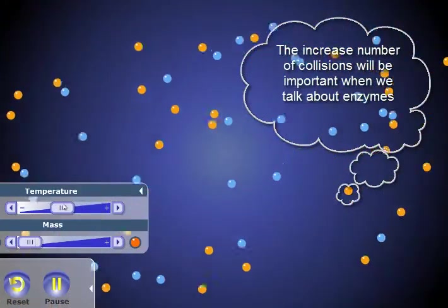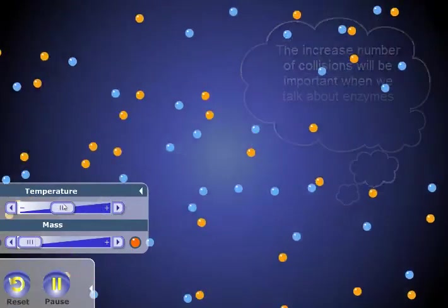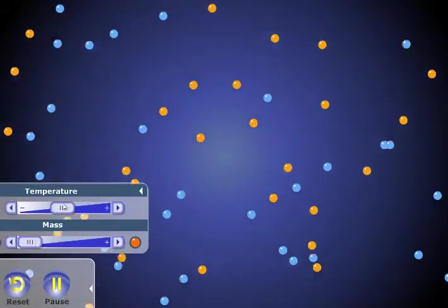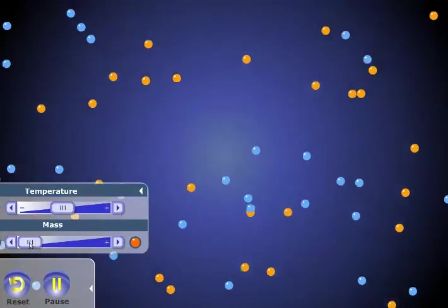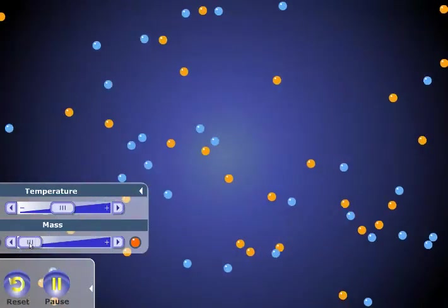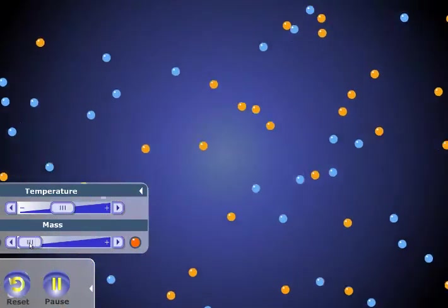So let me move it back. The second is the mass of an object. Now this relates back directly to the Brownian movement that we saw in molecular movement one.